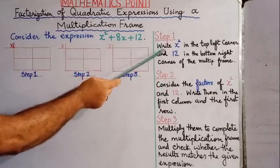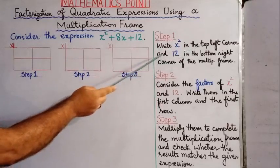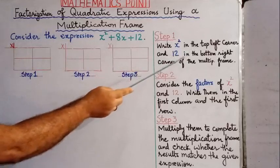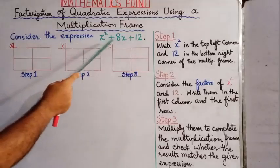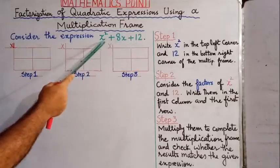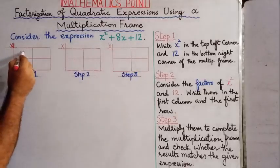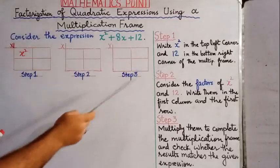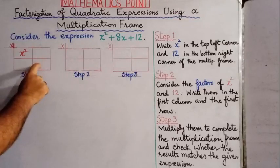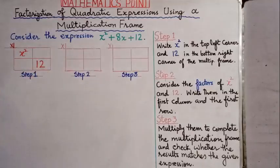Step number 1: write x² in the top left corner and 12 in the bottom right corner of the multiplication frame. So for the expression x² + 8x + 12, we write x² in the top left corner and 12 in the bottom right corner. This is our first step.